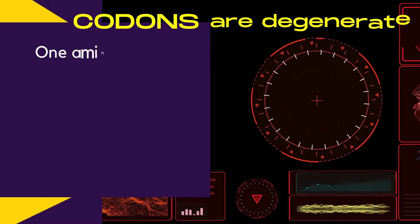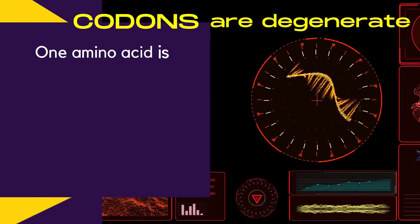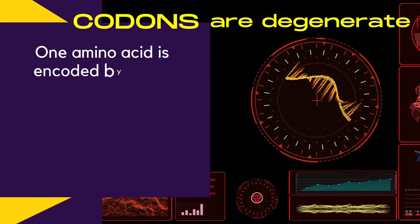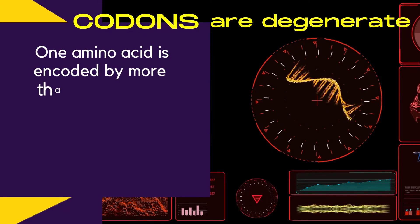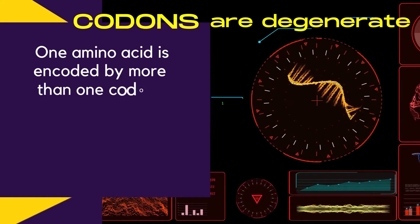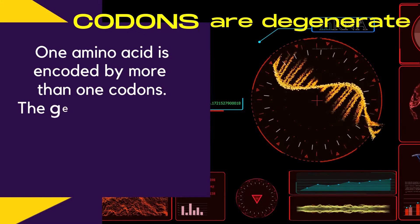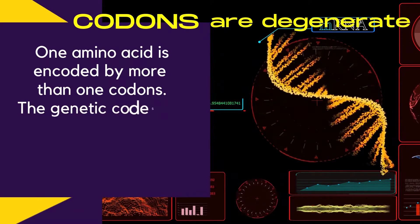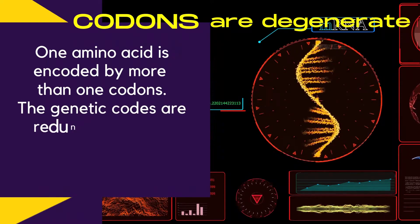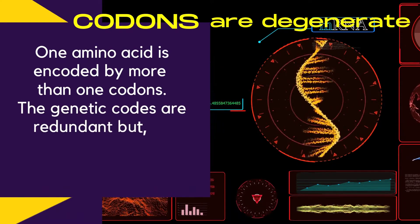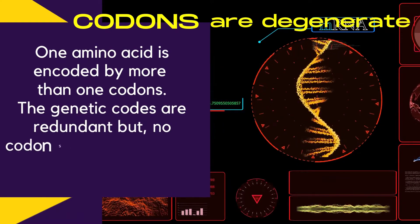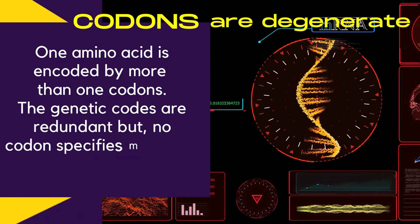Codons are degenerate. This means that one amino acid is encoded by more than one codon. Even though the genetic codes are redundant, no codon specifies more than one amino acid.